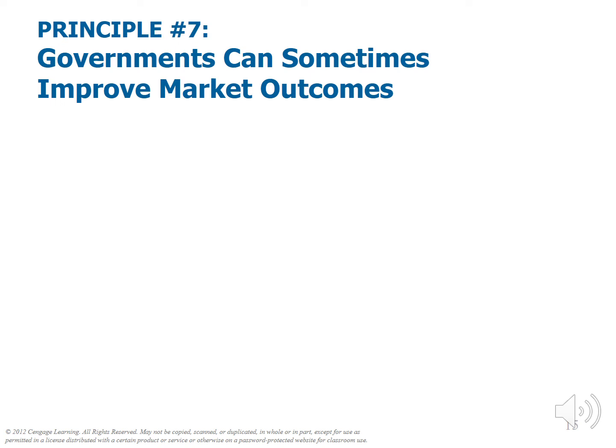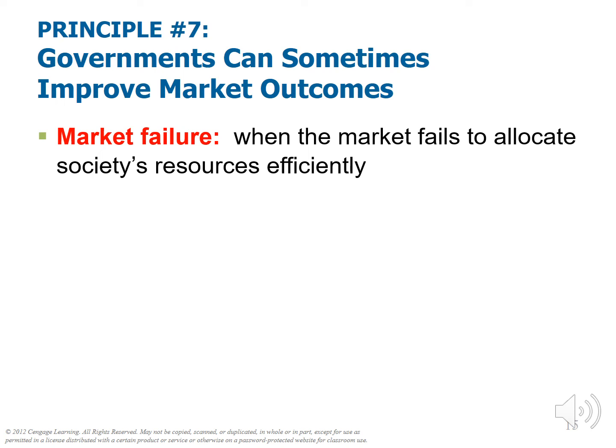Principle number seven continued: governments can sometimes improve on markets. Another example is market failure — when the market fails to allocate society's resources efficiently. Sometimes markets left to their own devices simply don't work as the invisible hand posits they should. One example of market failure is externalities. An externality is when the production or consumption of a good affects a bystander. For instance, someone smoking next to you — they enjoy it and are willing to pay the cost, but you get cancer from secondhand smoke. This externality decouples the idea that individuals pursuing their own best interest always leads to optimal social outcomes.